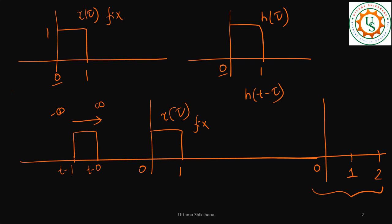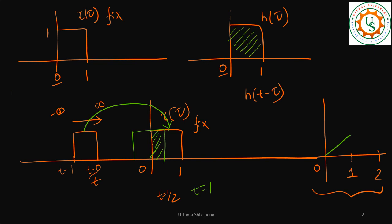Now I drag the sliding sequence so the two overlap. For example, at some t, there is a partial overlap — you can write that as a ramp, so the output increases. This overlap keeps increasing until t becomes 1, at which point both sequences overlap to the maximum extent. That is when we get the maximum amplitude.